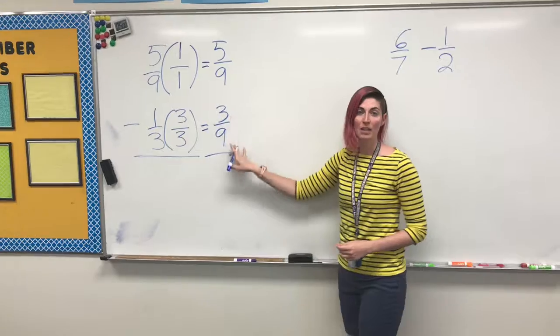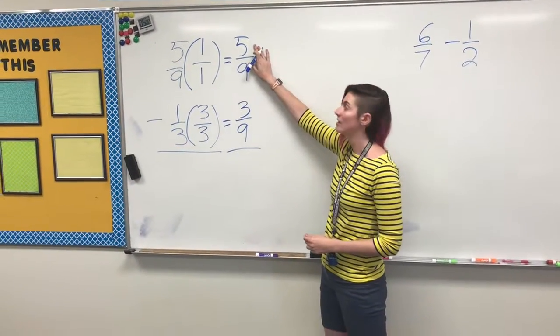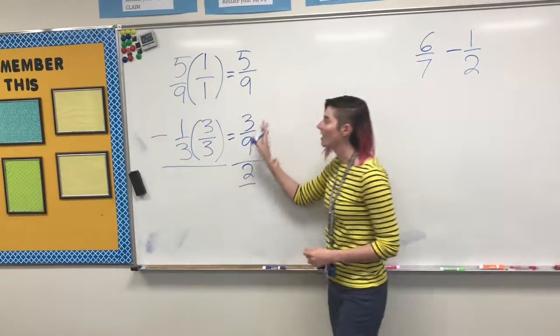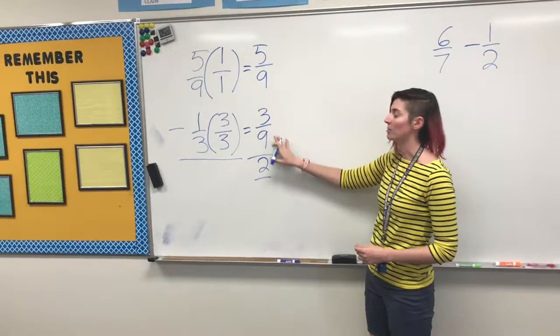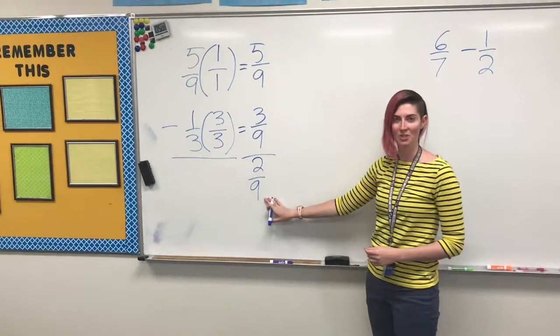We have our common denominators, so now we can subtract, starting with our numerators always. 5 minus 3 equals 2. And whenever we are adding and subtracting, our denominator will stay the same. So 9 comes down. 2 9ths is our answer.